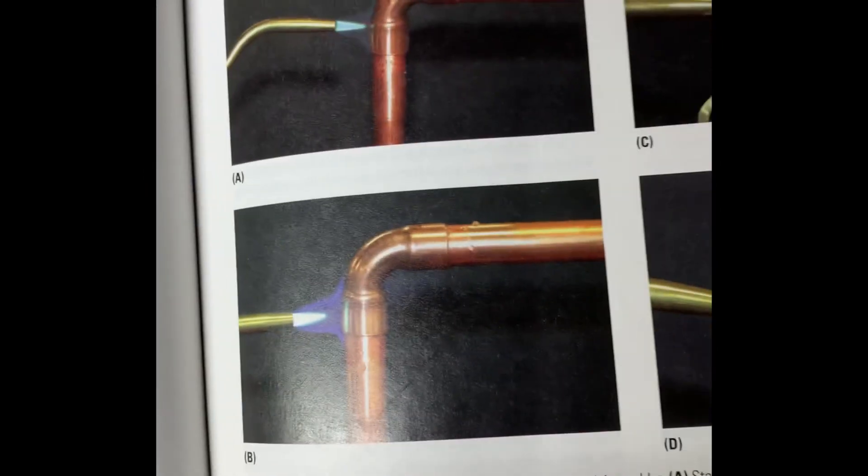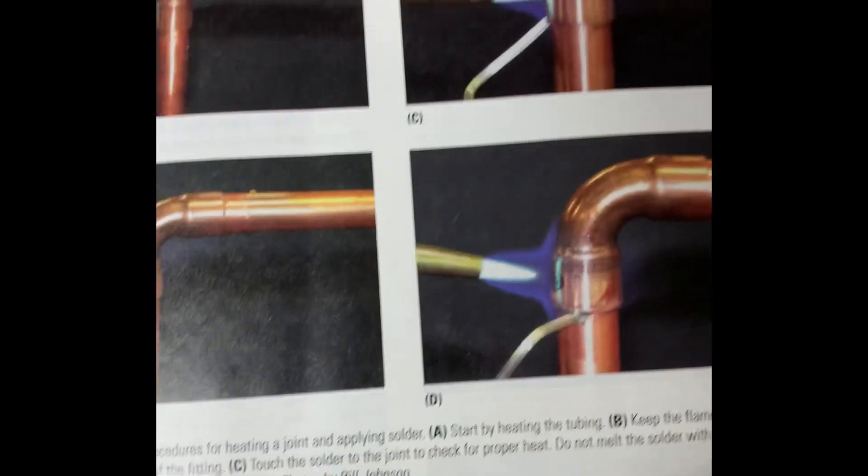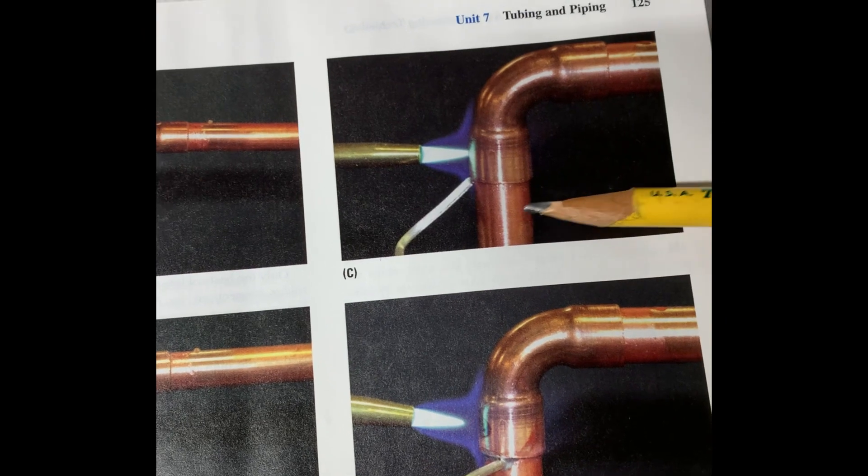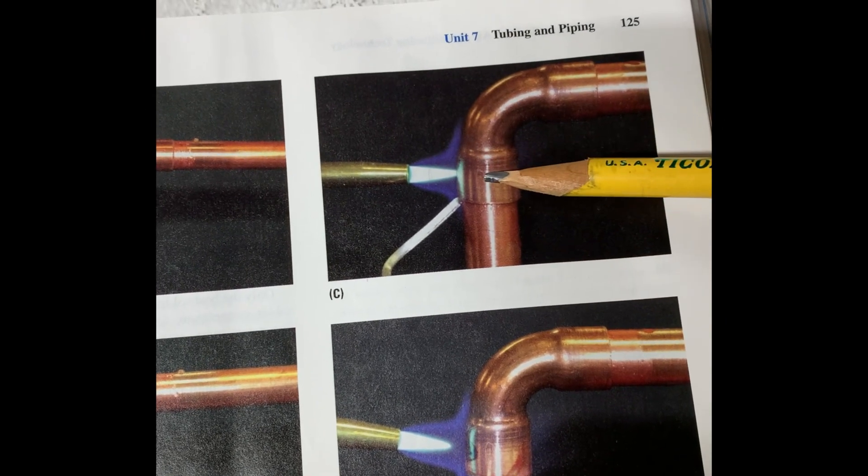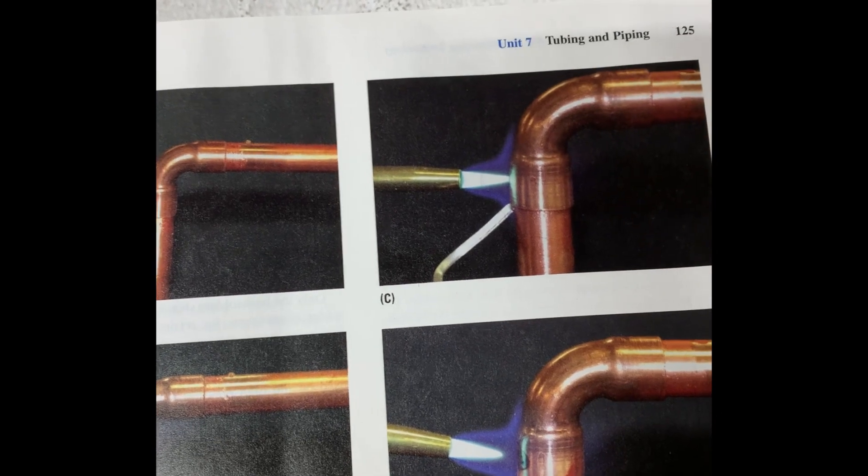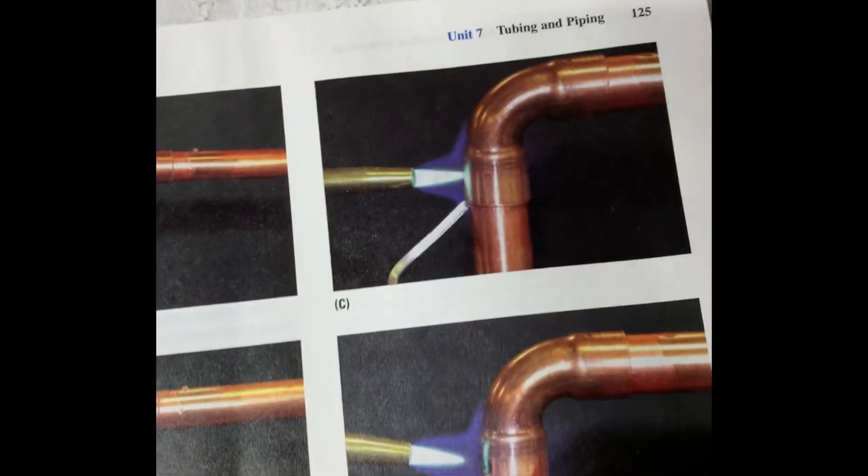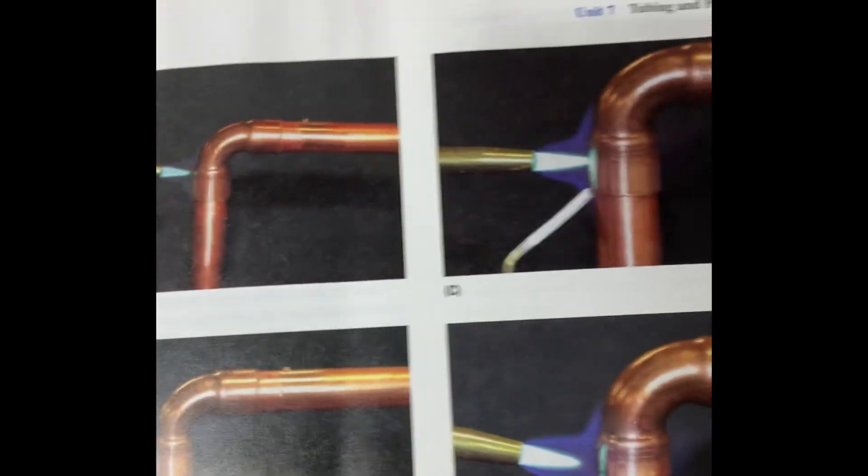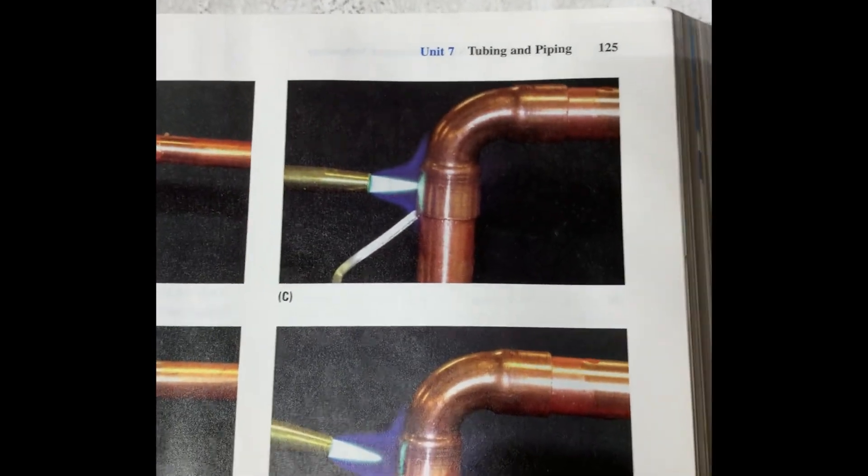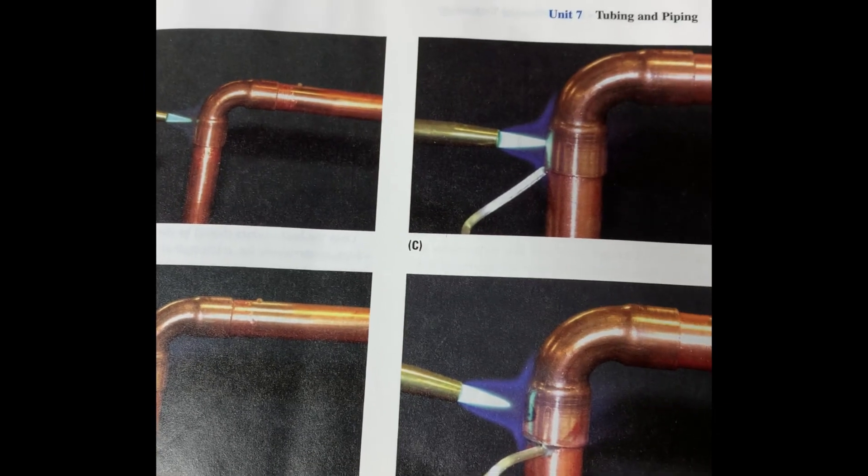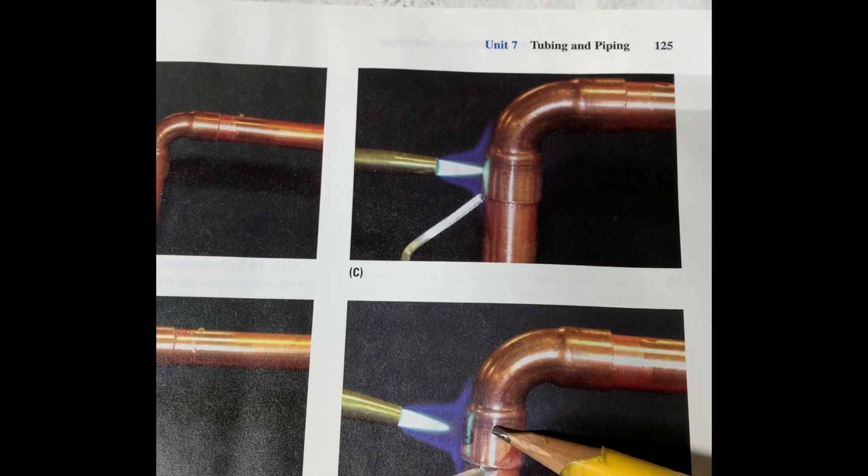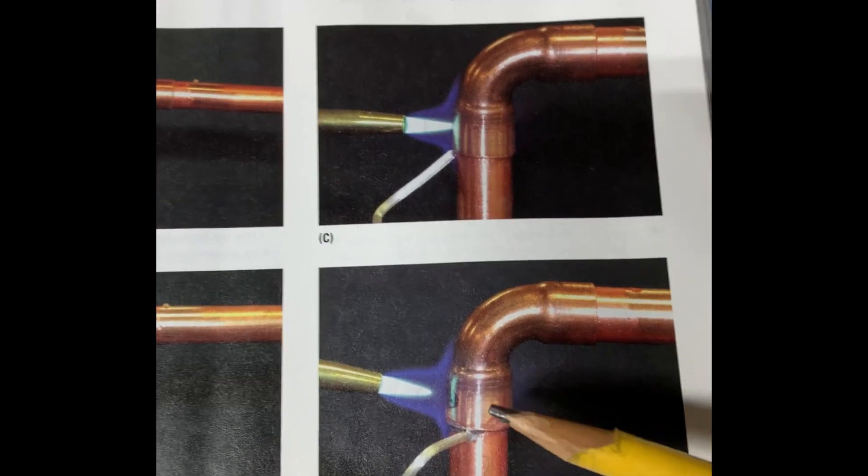But again, you'll want to start out heating the male portion of the copper, and then you'll move the heat to the female portion or the fitting, whether it be a 90 or a coupling or whatever the case may be. That's how you're going to apply your heat. You'll heat the male portion first, right? Then you'll move the torch to the female portion. You'll stay on this portion with your torch.